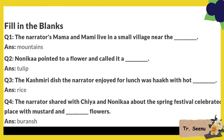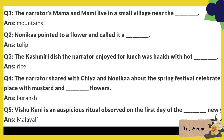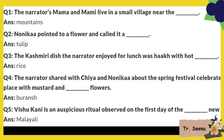The narrator's mama and mommy live in a small village near the mountains. Nonika pointed to a flower and called it a tulip. Look at the flower. What is the tulip? The Kashmiri dish the narrator enjoyed for lunch was haak with hot rice.